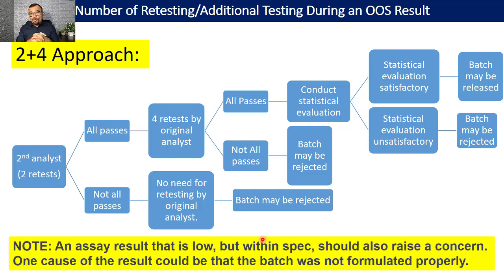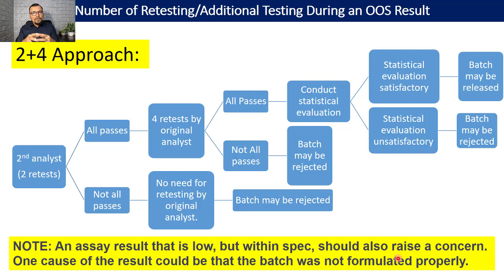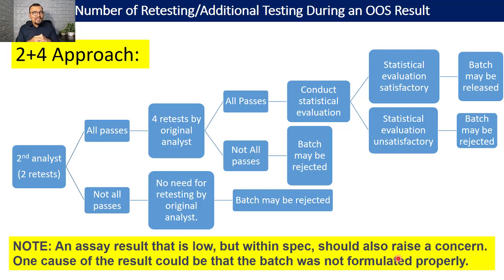An important cautionary note: an assay result that is low but within specification should also raise a concern. For example, if your specification is 90 to 110 percent, and your assay results are consistently close to 90 percent — like 90.5 or 91 percent — you have to think about whether the batch should be rejected or released, because the batch may not meet the predefined stability specification if there is a drop in assay found during a stability study.